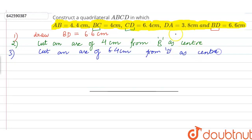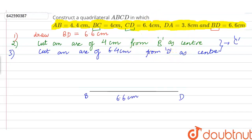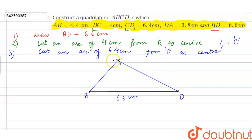We have done this because CD and BC will give us a common point of intersection, and that point is point C of our quadrilateral. We have drawn BD already — this is point B and this is point D, with BD measuring 6.6 centimeters. We keep the compass at B, open it to 4 centimeters and cut an arc, then keep it at D, open to 6.4 centimeters and cut another arc. The intersection of these two arcs is point C. We join point C to point B and point D to obtain sides BC and CD.